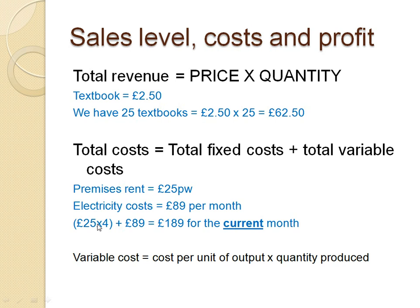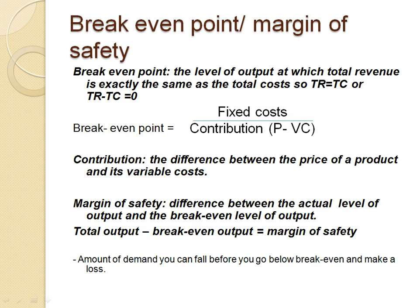Variable cost equals cost per unit of output times quantity produced. The breakeven point is the level of output at which total revenue exactly equals total cost — so total revenue minus total cost equals zero. A simple formula for breakeven is: fixed cost divided by contribution, where contribution equals price minus variable cost.